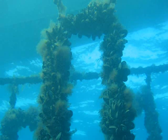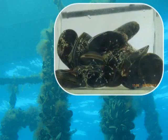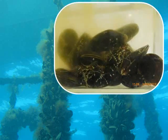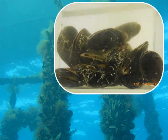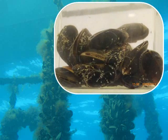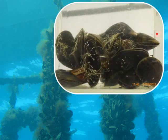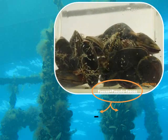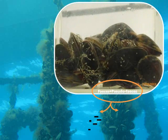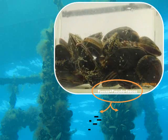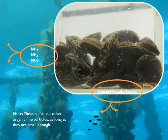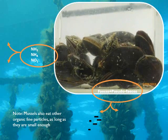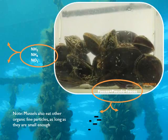Mussels are called filter feeders because they can filter small organic particles — the green microalgae. In this time-lapse video with mussels in an aquarium, you can see the microalgae — the green thing — being filtered out, the water gets clear, and the mussels expel pseudofeces and feces. These would settle at the bottom of the ocean. They also excrete nitrogen, just as fish and animals do. So that is the mussel part of the equation.